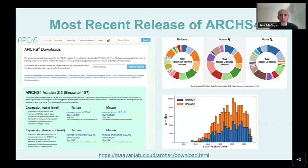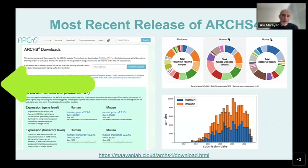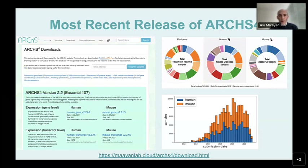There is constant growth in the samples added to GEO. Even though you see a drop in 2023, this is an artificial drop because it takes some time for the samples to become available. What we're going to try to convince you today is that ARCHES-4 is not just serving all of this data — which is already very useful for the community — it has a whole layer of tools and other resources that use the data and demonstrate how to use it.